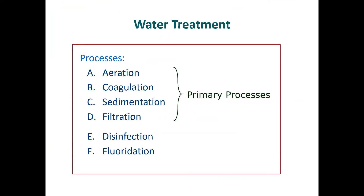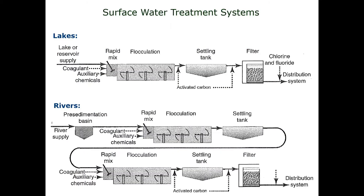That's the basics of water treatment. The coagulation, filtration, and disinfection are the three most important parts — you're getting out the silt and solids from coagulation and flocculation, you're filtering everything, and then you're killing anything that's left through disinfection processes. This diagram out of a textbook shows rivers and lakes. Lake water tends to be cleaner than rivers — not 100% always the case.